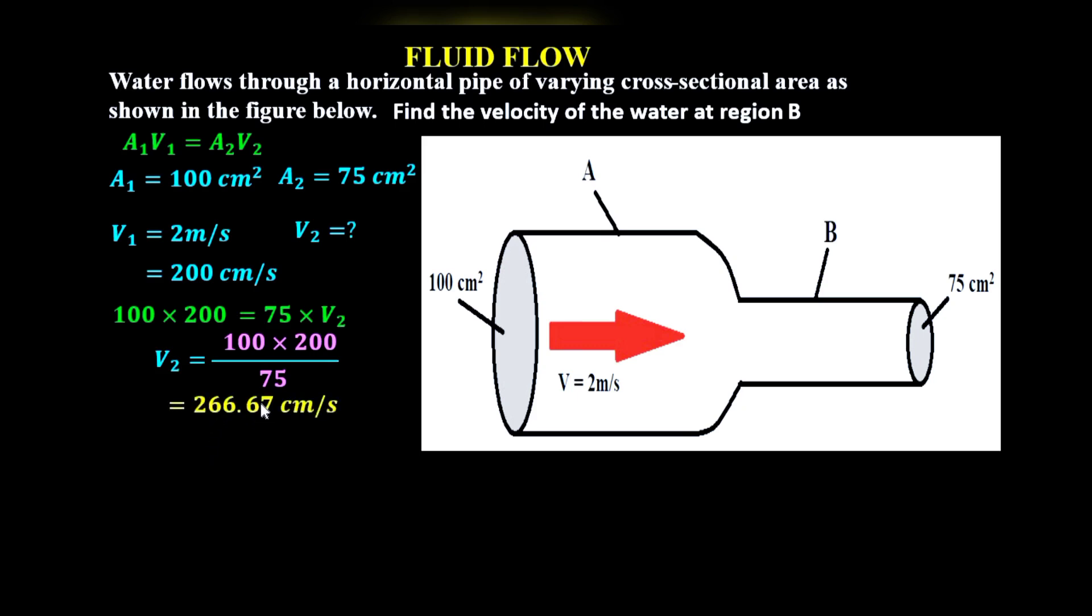If you wish, you can convert this into meters per second by dividing it by 100, and that is 2.6667 meters per second. Remember, I'm dividing by 100 because 100 centimeters is equivalent to 1 meter.